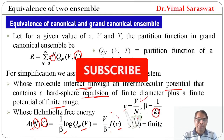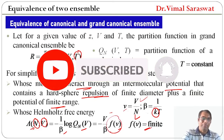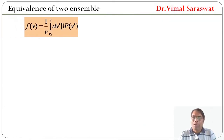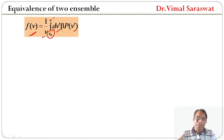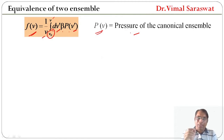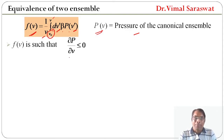f(v) is finite and temperature T is constant. So, f(v) is equal to 1 over v times the integral from v₀ to v of dv' beta p(v'). Here, p(v) is the pressure of the canonical ensemble, and f(v) is such that del p by del v is less than or equal to 0.